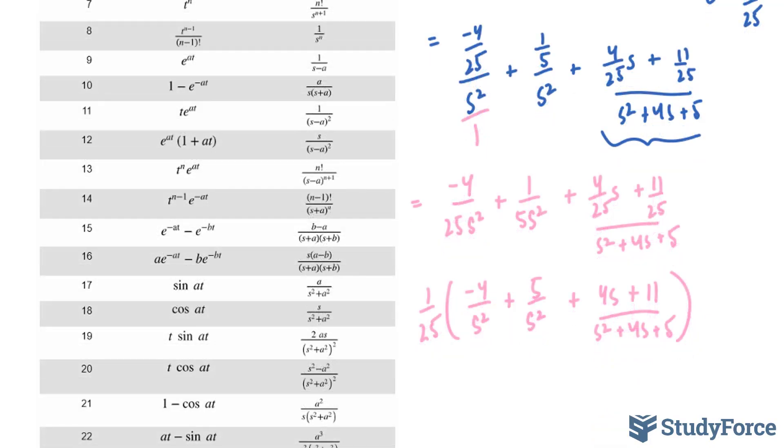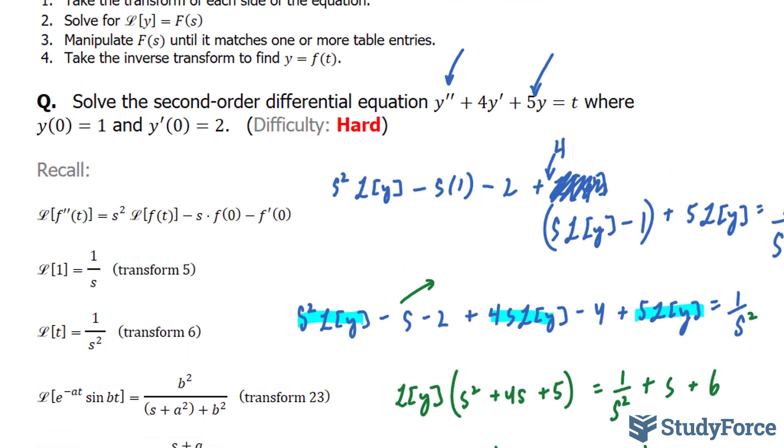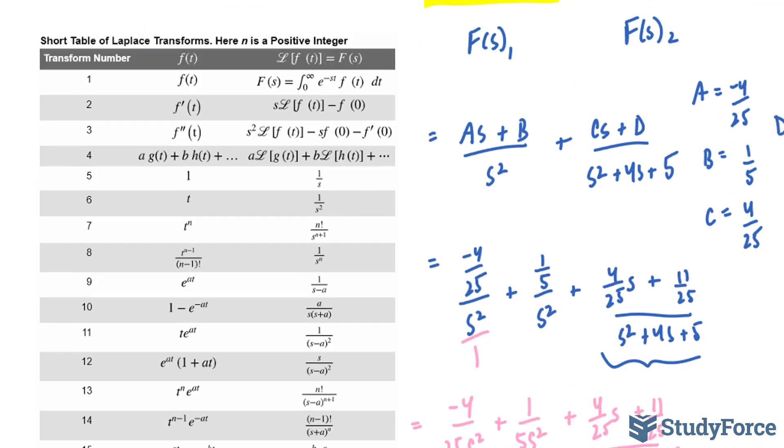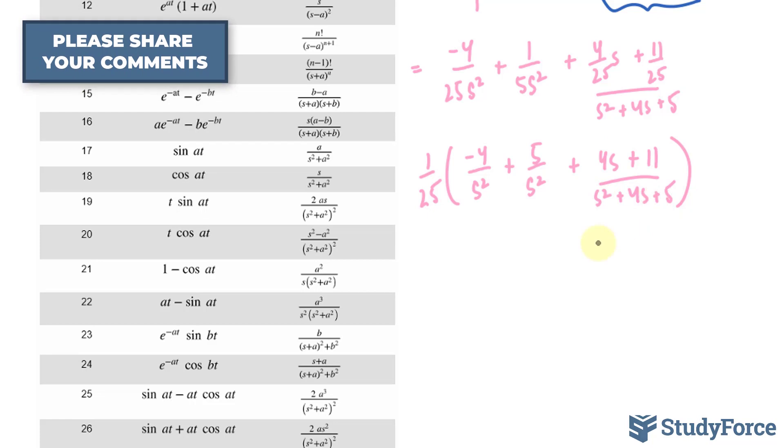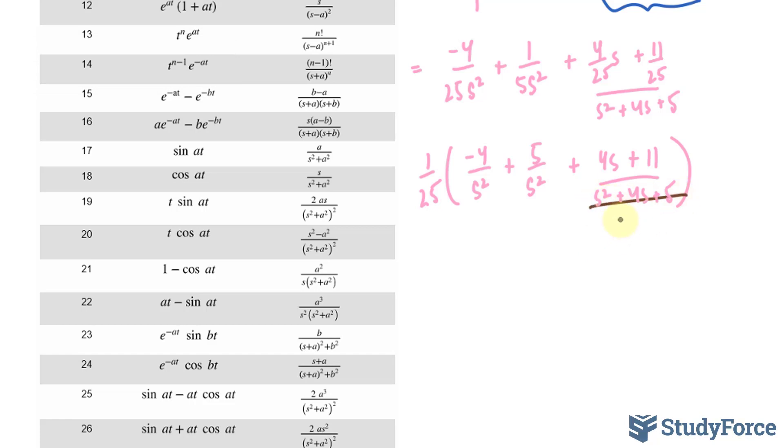Now before I convert these with those that I showed over here, transform 5 and 6, I want to manipulate this a little further, like I mentioned earlier. To go from standard form to vertex form, it's called completing the square. And if you complete the square correctly, you should end up with, instead of this quadratic, (s + 2)^2 + 1.